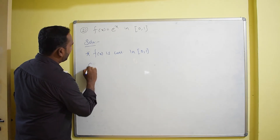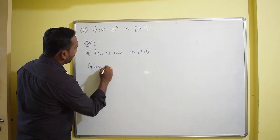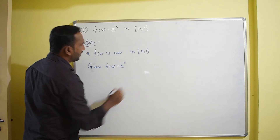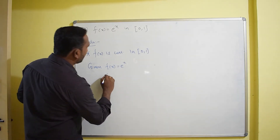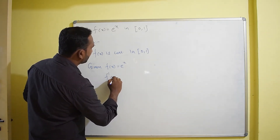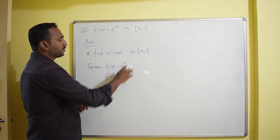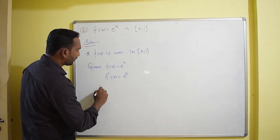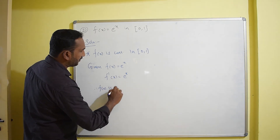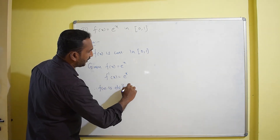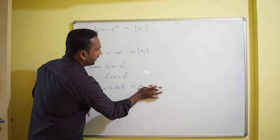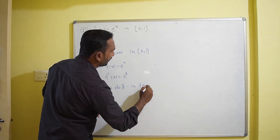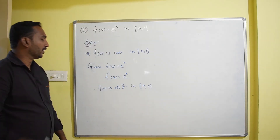Second condition: given f(x) = eˣ, the derivative is simply f'(x) = eˣ, since the exponential function differentiates to itself. Therefore f(x) is differentiable in the open interval (0, 1).